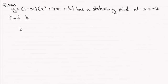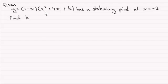Now for this part, we're given that y equals (1 - x)(x² + 4x + k), where k is a constant. We're told it has a stationary point at x = -3. Find k.